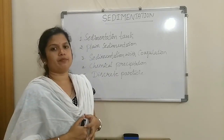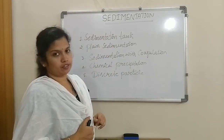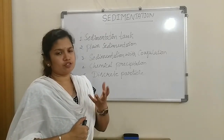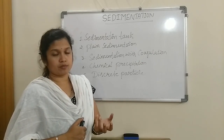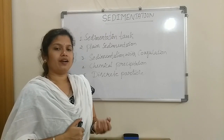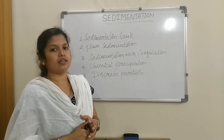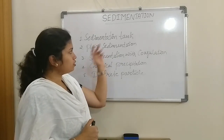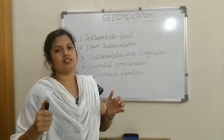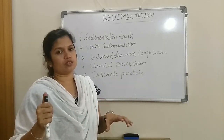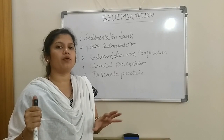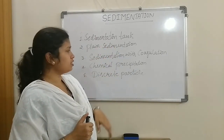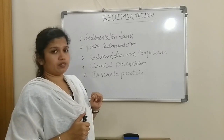Now let us discuss some important definitions. Sedimentation is the process wherein suspended particles and impurities present in the water are removed by the natural process of sedimentation using gravitational forces and natural aggregation. The sedimentation tank is the tank in which this process takes place - the area is increased and velocity of flow is decreased, causing suspended impurities to settle to the bottom.